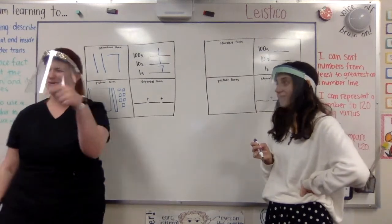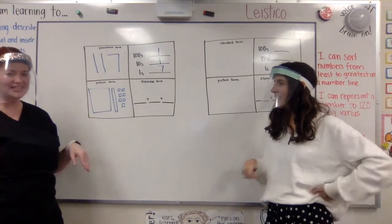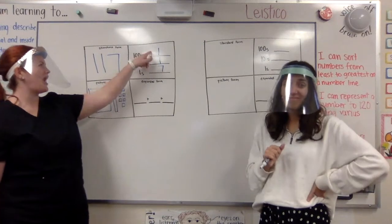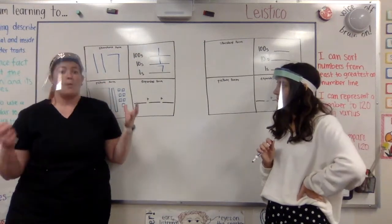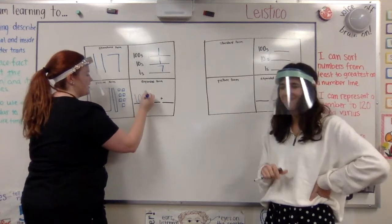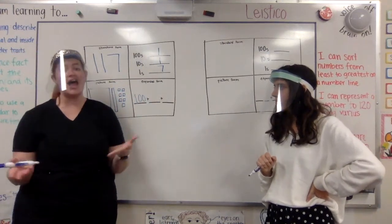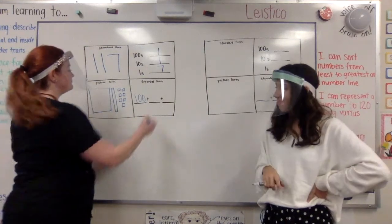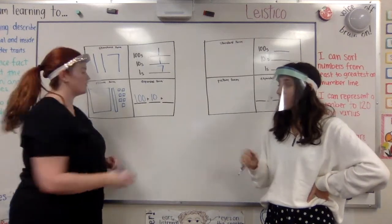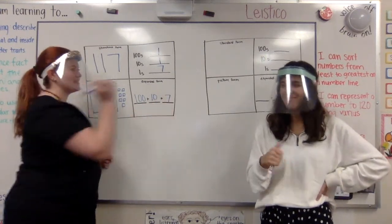Oh, expanded form. You guys are doing great at this. I need the value of my 100 plus the value of my 10 plus the value of my 1. I have 1 hundred, 100 is worth 100. And I have 1 ten, and 1 ten has a value of 10. And I have 7 ones, and 7 ones is just worth 7. So my expanded form is 100 plus 10 plus 7.